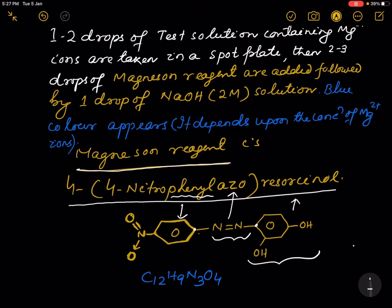And 1, 2, 3, 4. At the 4 position, the nitro group is there. And this is 1, 2, 3, 4. At the 4 position, the azo group is there. This group is present at the 4 position of resorcinol.